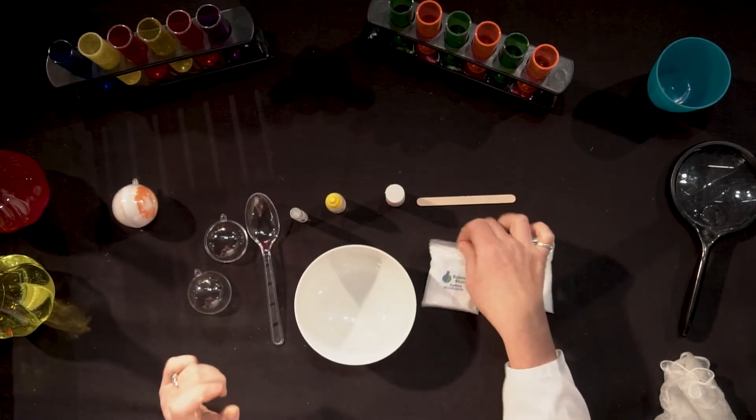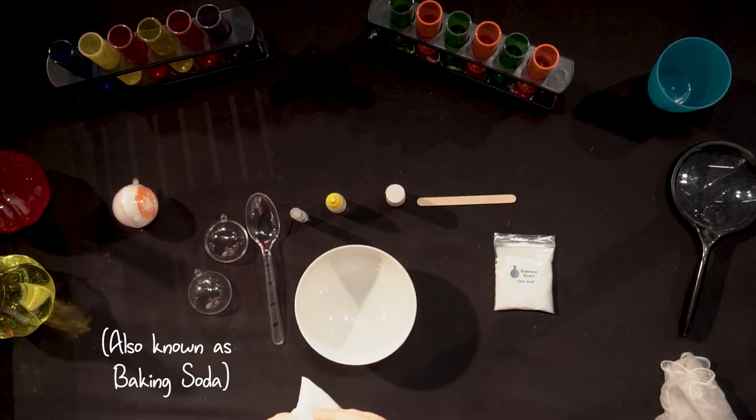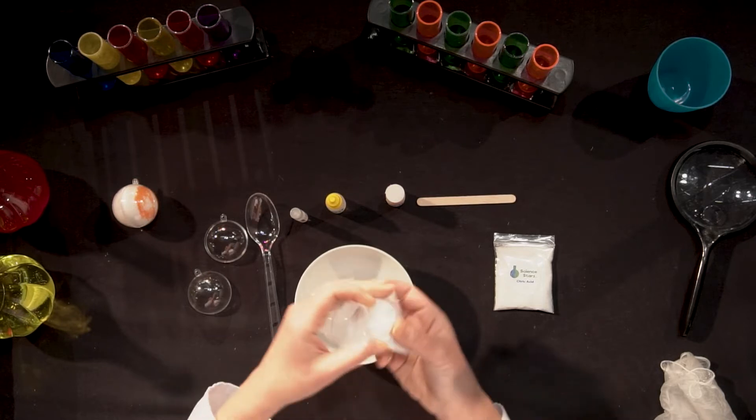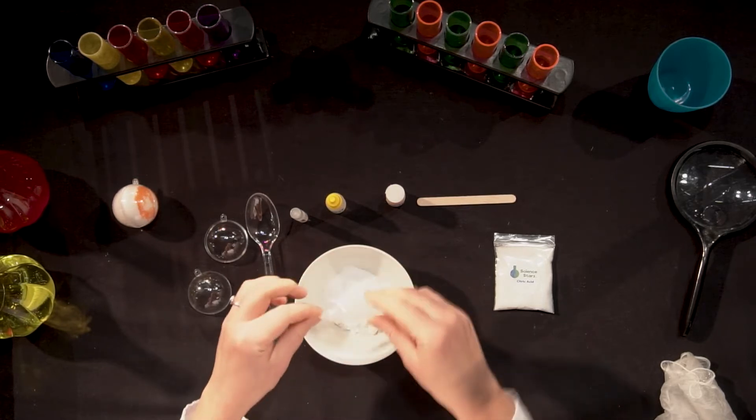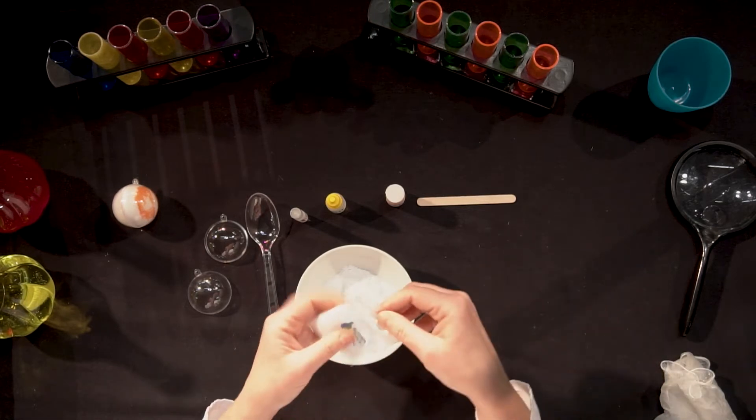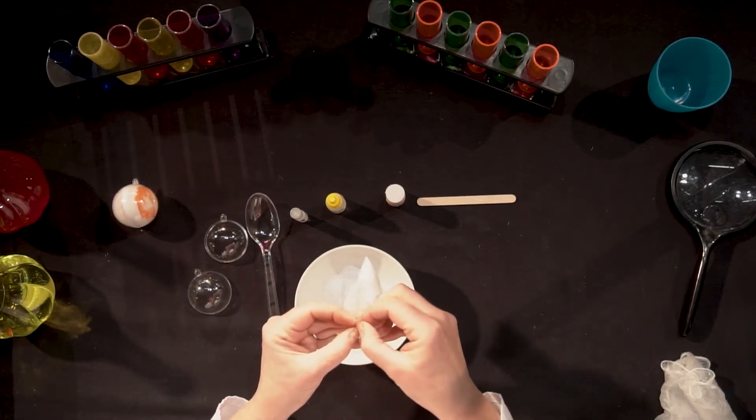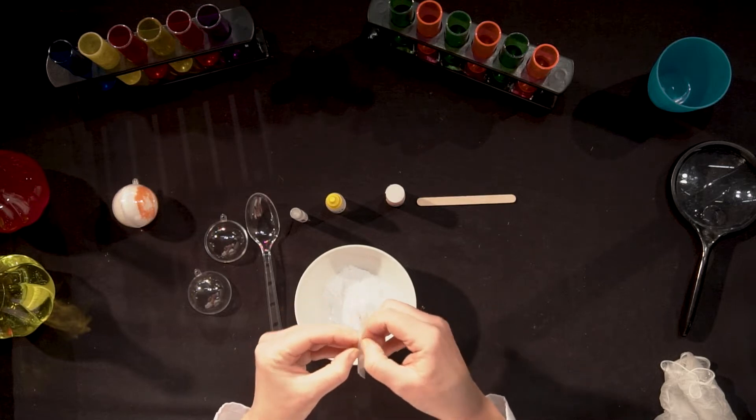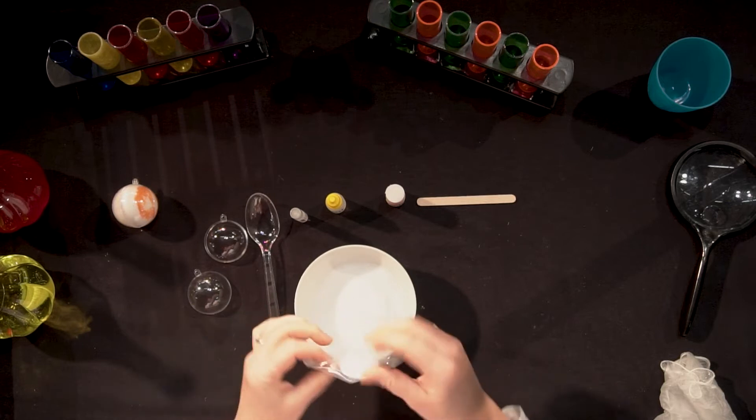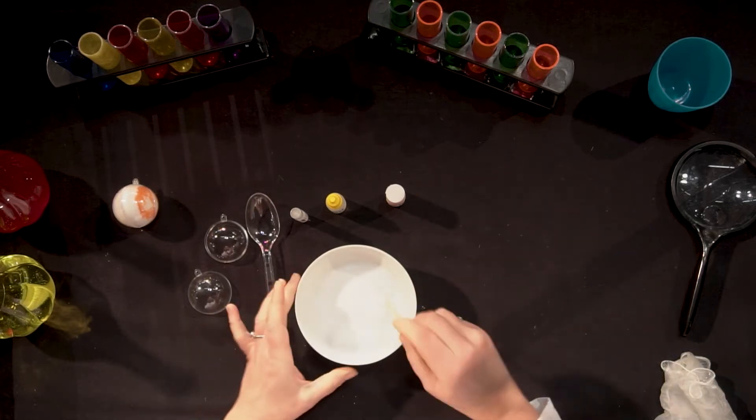So to start, take your sodium bicarbonate or baking soda, as some people call it, and empty it into your bowl. Then take your citric acid and you're going to pour it into the bowl as well. Just dump it all in. And then give it a good stir.